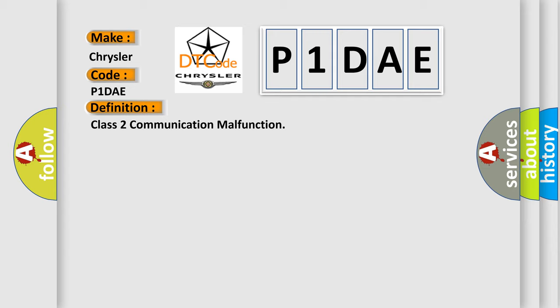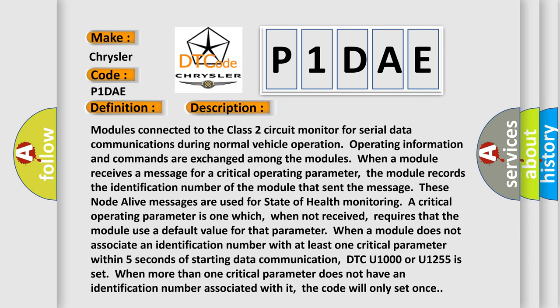The basic definition is: Class 2 communication malfunction. Modules connected to the Class 2 circuit monitor for serial data communications during normal vehicle operation. Operating information and commands are exchanged among the modules. When a module receives a message for a critical operating parameter, it records the identification number of the module that sent the message. These node alive messages are used for state of health monitoring. A critical operating parameter is one which, when not received, requires that the module use a default value for that parameter. When a module does not associate an identification number with at least one critical parameter within five seconds of starting data communication, DTC U1000 or U1255 is set. When more than one critical parameter does not have an identification number associated with it, the code will only set once.